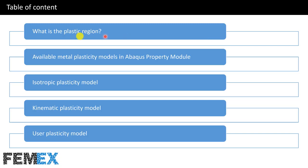This is the table of content. I will talk about what is the plastic region, available metal plasticity models in Abacus property module, isotropic plasticity model, kinematic plasticity model, and user plasticity model.